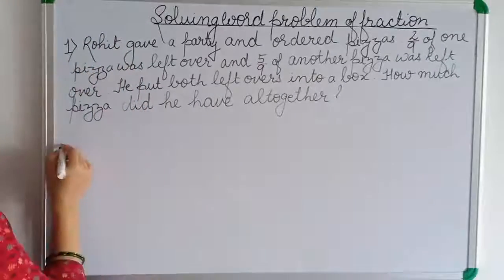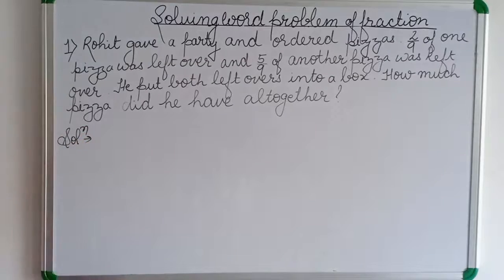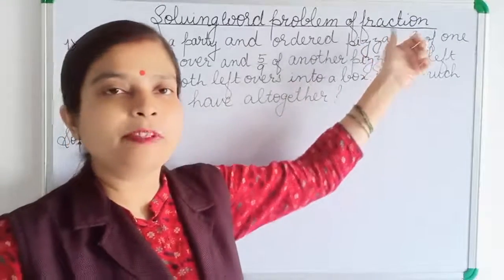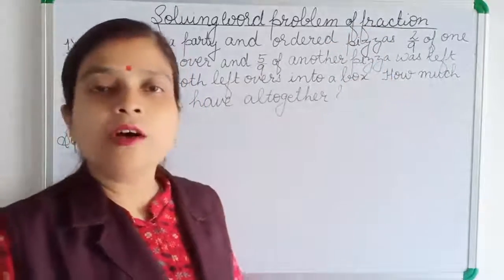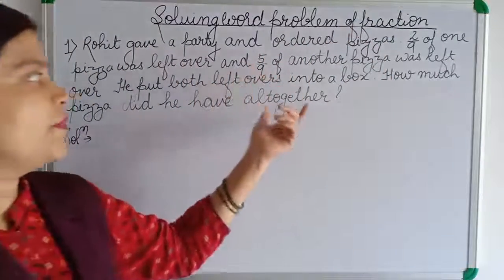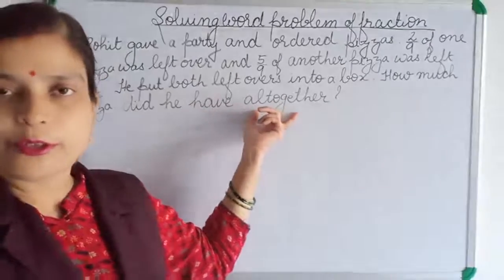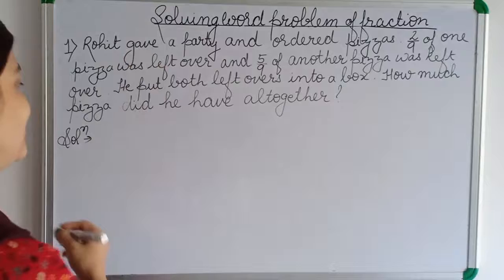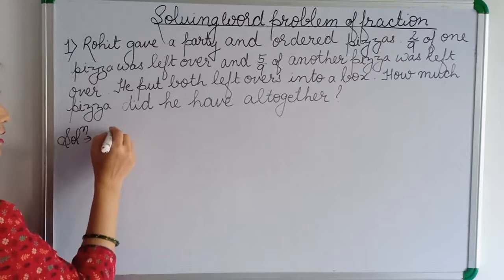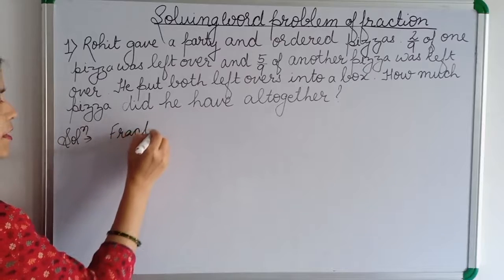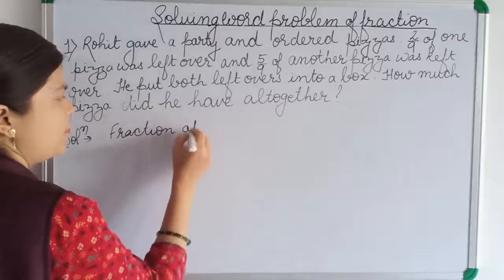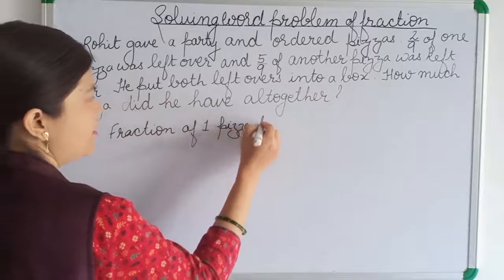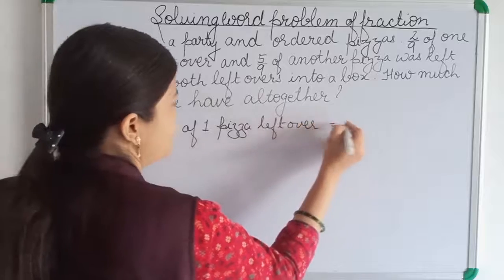So how do we solve this? What is given: the part of the pizza left over in one pizza and in another pizza. We have to add both the leftover parts to get the total pizza left altogether. The first fraction, the leftover from one pizza, is two by nine.